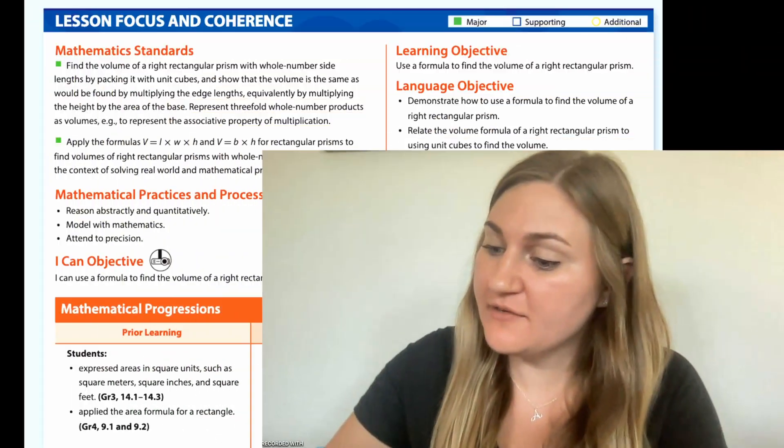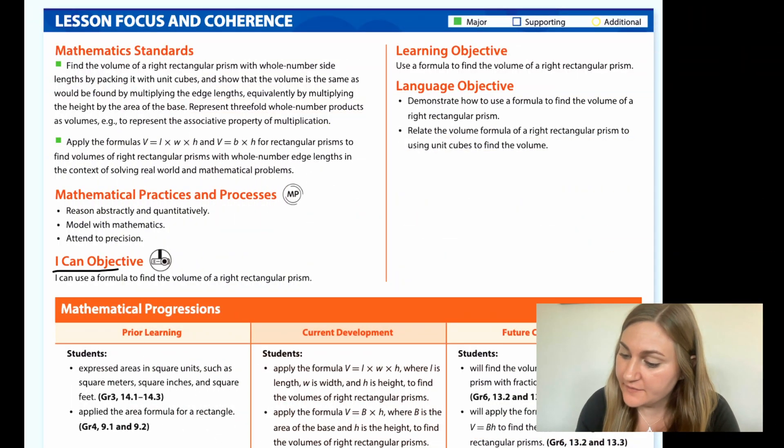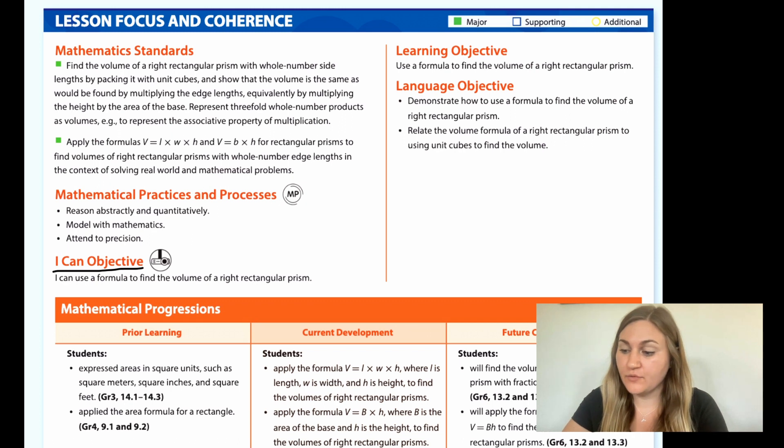Hi, I'm Natalie Rhodes and this is IntoMath's 5th grade, Module 5, Lesson 5. I'm going to start off by going over the I can objective. It says I can use a formula to find the volume of a right rectangular prism. And the learning objective is to use a formula to find the volume of a right rectangular prism.